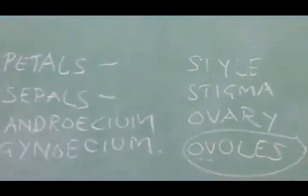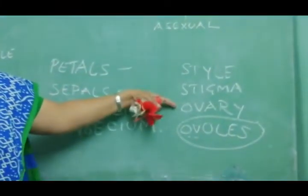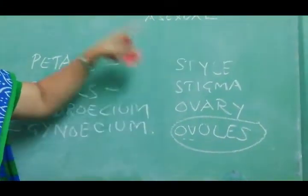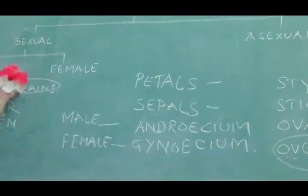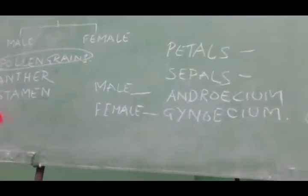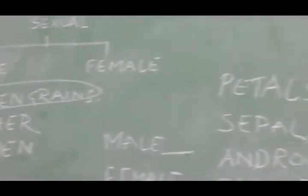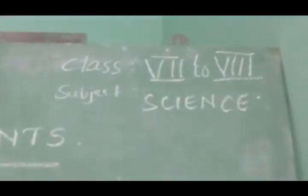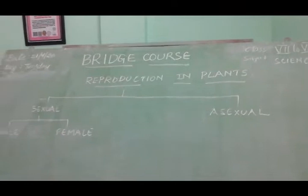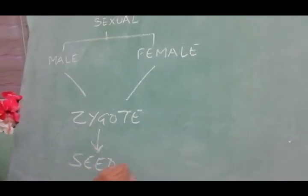This ovary is connected to the style by the stigma. When the pollen grain comes and rests over the stigma, the style takes the male gamete — the pollen grain — into the ovary through the stigma. When the pollen grain reaches the ovary, the male gamete fuses with the female gamete, that is the ovule, and this fusion leads to the formation of a zygote.